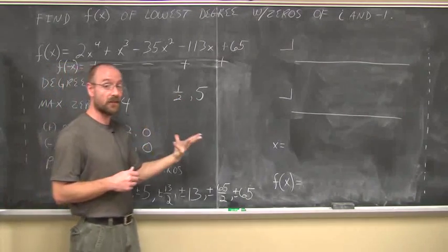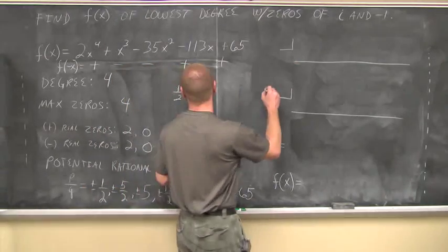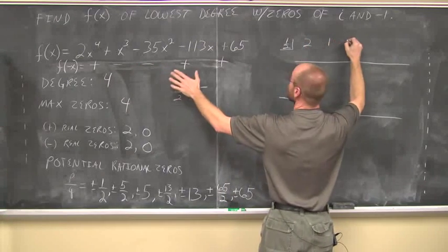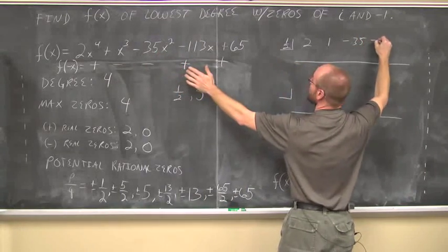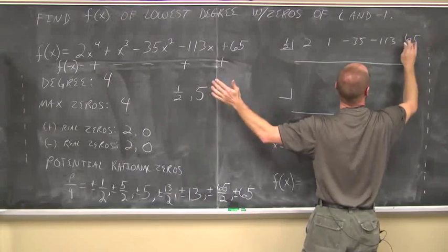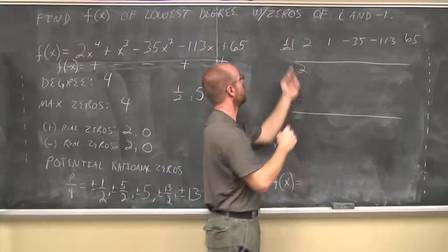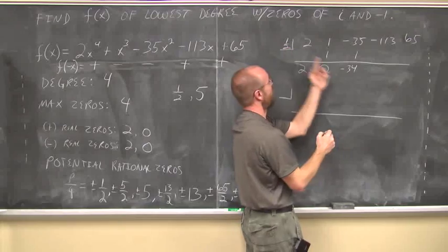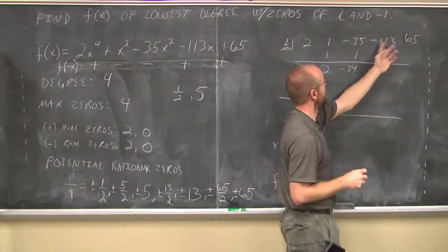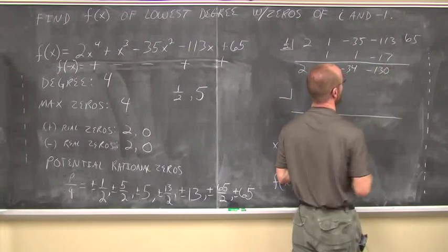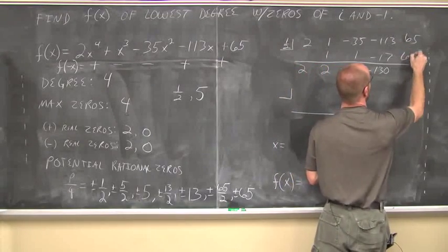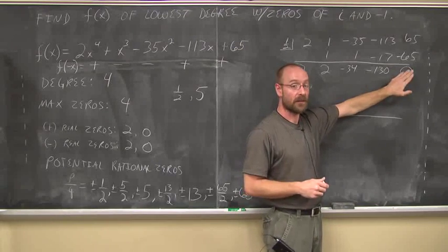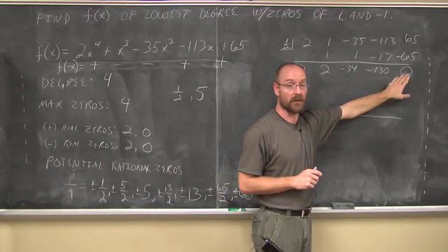Let's factor them out using synthetic division. Using 1 half, I rewrite the coefficients: 2, 1, negative 35, negative 113, and positive 65. Bring the first term down. Half of 2 is 1; 1 and 1 is 2; half of 2 is 1; negative 35 plus 1 is negative 34; half of negative 34 is negative 17; negative 113 plus negative 17 is negative 130; half of negative 130 is negative 65; and 65 minus 65 is 0. A zero remainder — that confirms x minus 1 half is indeed a factor.